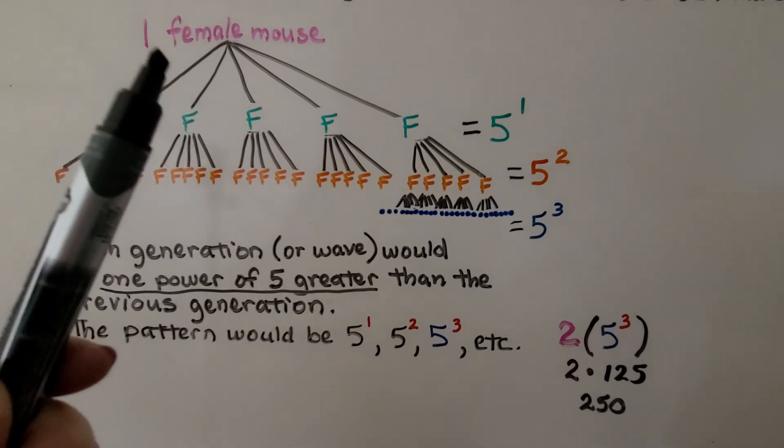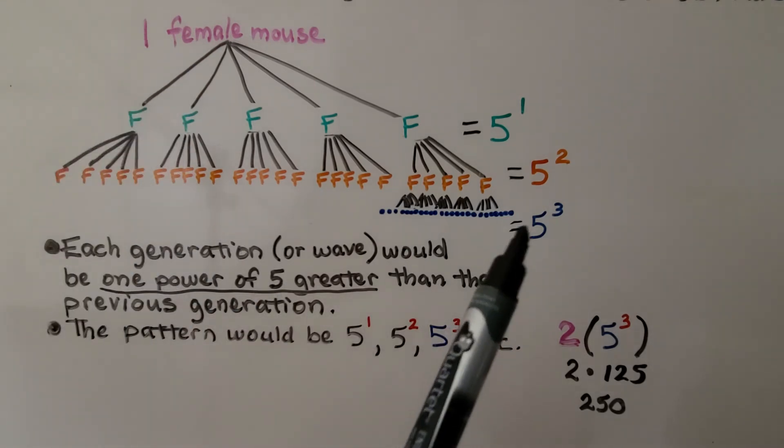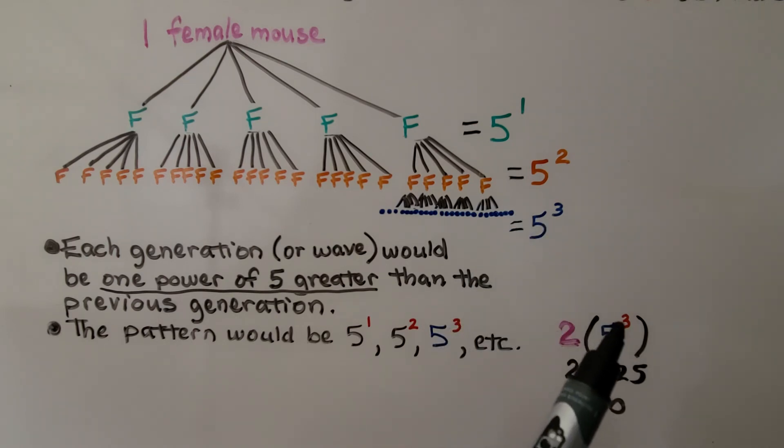So if we had 2 female mice, at this point we would have 2 times 5 raised to the third power. We'd have 5 times 5 is 25 and 25 times 5 is 125. So that means we have 2 times 125, that would be 250 mice. So we evaluate the exponent first, then we multiply it to the 2.